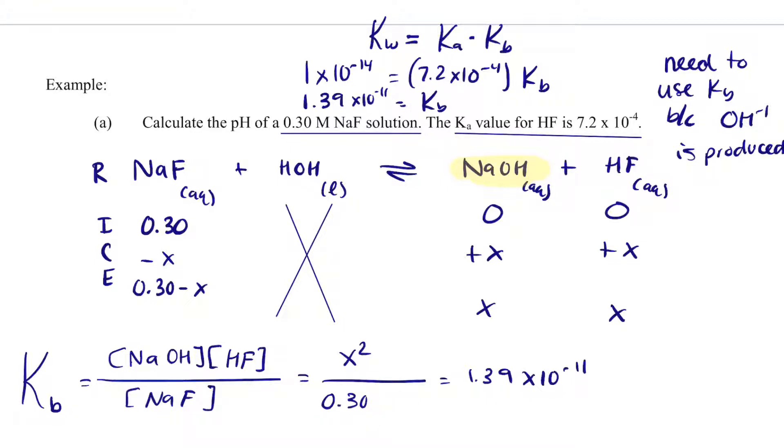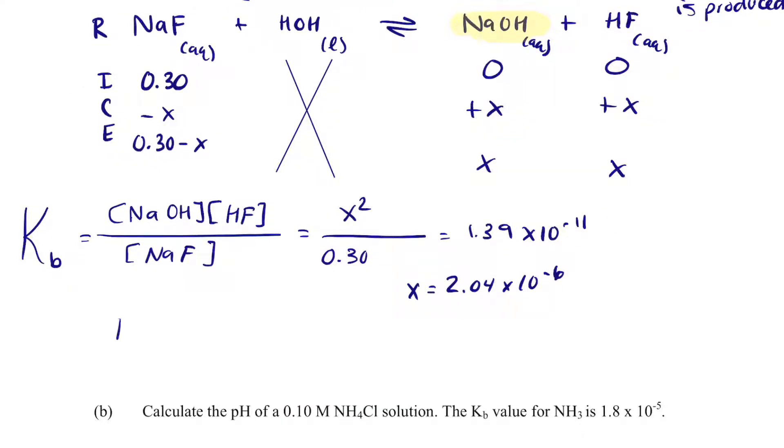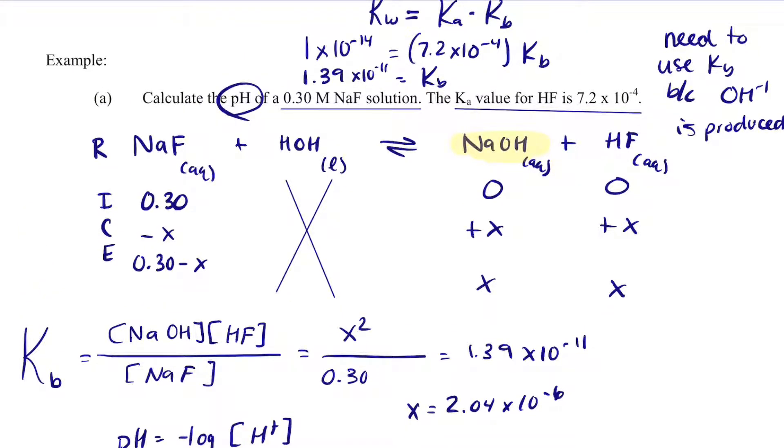And so when I solve for X, X is 2.04 times 10 to the minus 6. I want to get the pH. So if I take the negative log of this, pH equals negative log H⁺. I can't use that because my X is for hydroxide.